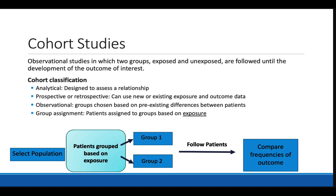One level down in the quality of evidence is the cohort study, in which patients are grouped based on pre-existing exposures and then assessed and compared based on the outcome of interest. Importantly, cohort studies can be retrospective or prospective, so use caution when interpreting the design. Because investigators are not intervening in patients' lives and randomizing patients to the exposures, cohort studies are considered observational. In observational studies, we always need to look at how patients are grouped — cohort studies group based on exposure.